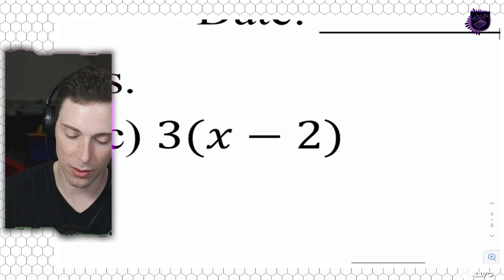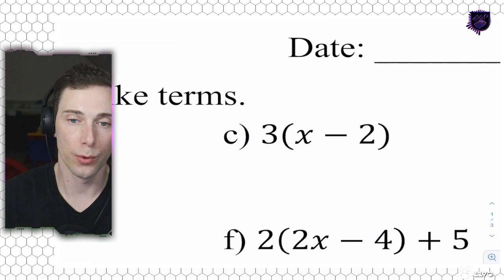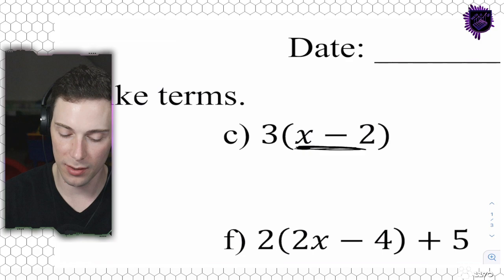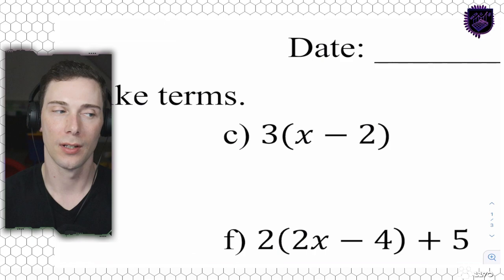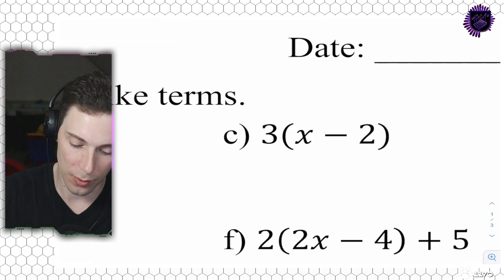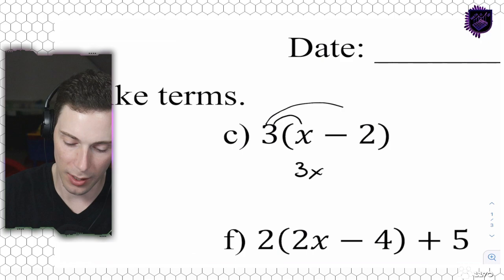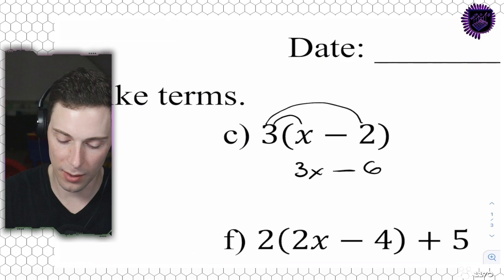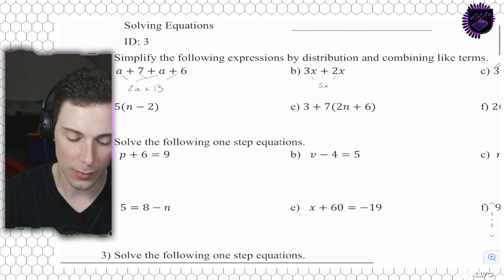Question 1c. Now this is our first distributive property. If this was algebra and order of operations, we could simply do what's inside the brackets and then multiply by the three afterwards. But this is not - this is solving equations and we don't know what x is. We can't add or subtract x and 2 because we don't know what x is, but we can distribute. So first we'll multiply to get 3x and then multiply to get minus 6. That's our answer: 3x minus 6.